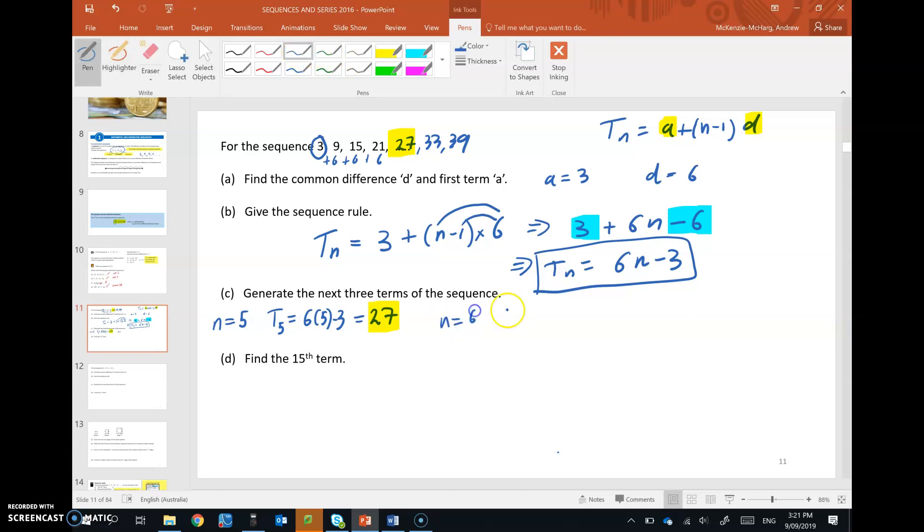When n is 6, the 6th term in the sequence, 6 by 6 take 3 gives, 6 6s are 36, take 3, 33. So that matches what we said it was going to be. And if we did the same thing for term 7, we'd get 39. I'm sure you would believe me.